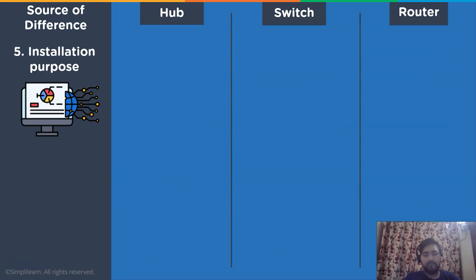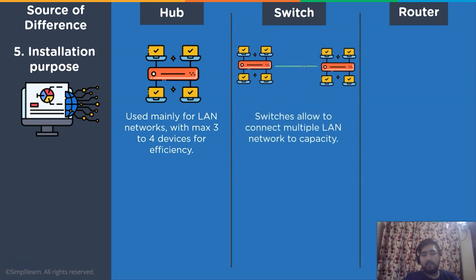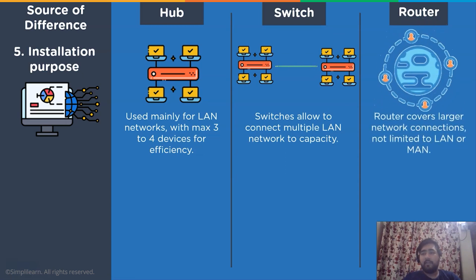The next difference is based on installation purpose. A hub is mainly preferred in a LAN network or in a private network where two to three devices are to be connected, which increases efficiency due to the absence of a processing unit. As for a switch, it connects multiple LAN networks or a large area network. As for a network router, it is a global network that connects multiple devices across the globe.